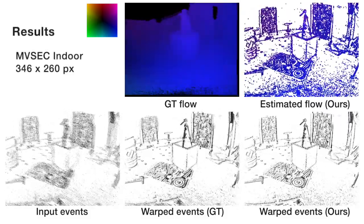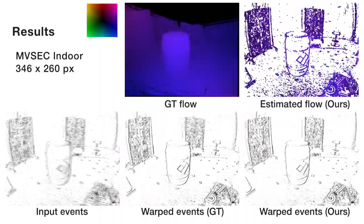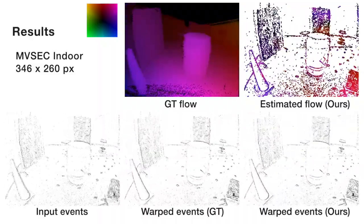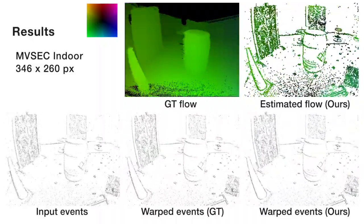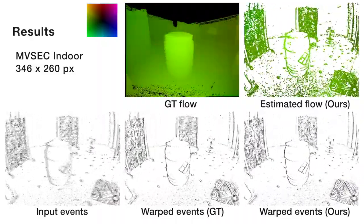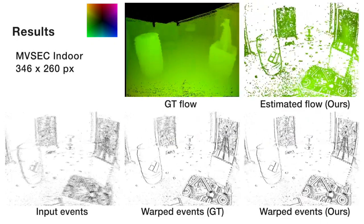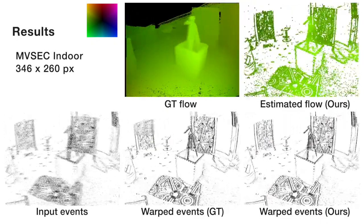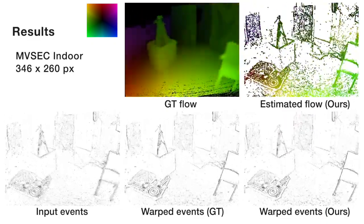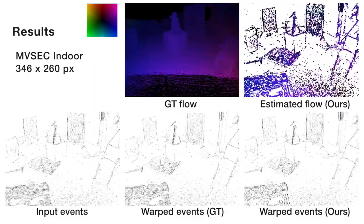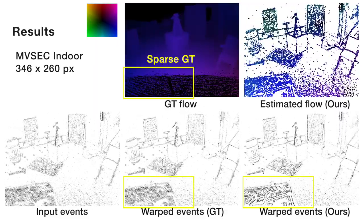These are results on the MVSEC indoor sequence. The ground truth flow is calculated based on LIDAR, so it has missing pixel values according to its limited field of view, range, or spatial sampling. Our estimated flow can reveal sharp-edge structure in such pixels where the ground truth is missing.